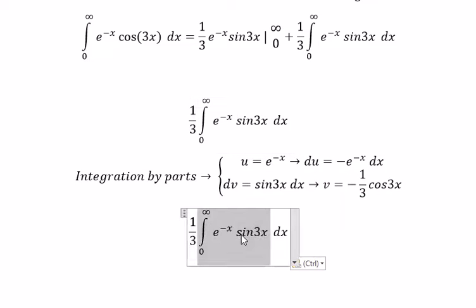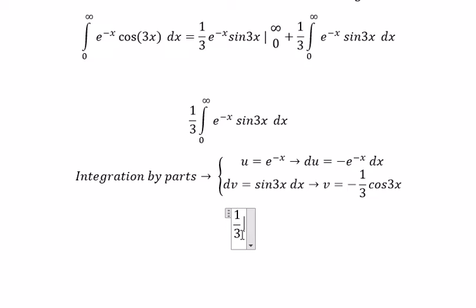So we have e to the negative x multiplied with this one, multiplied with this one.